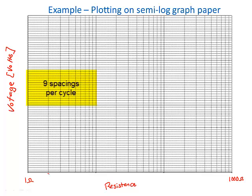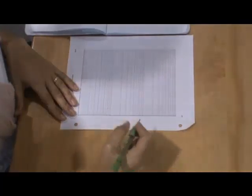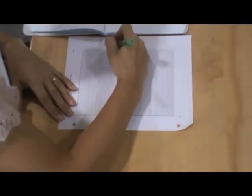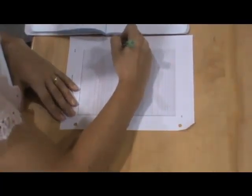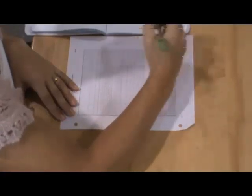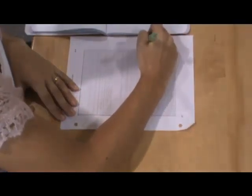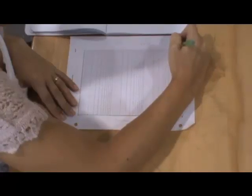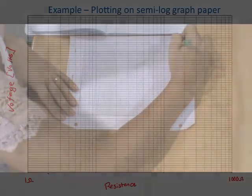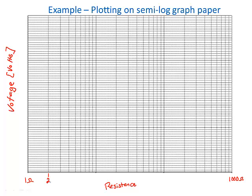There are nine spacings that get smaller as you move over to the right and then it starts all over again. This is because the spacings indicate the logarithmic distances. Remember that there is no log of zero. So, we will label the first tick mark as 1, the next one 2, 3, and so on until you reach 10.